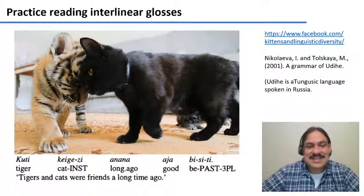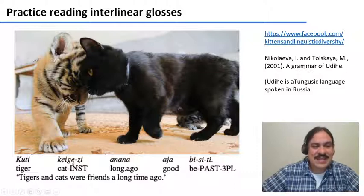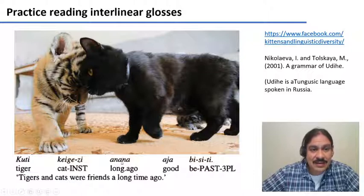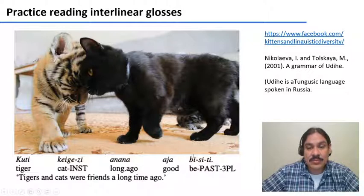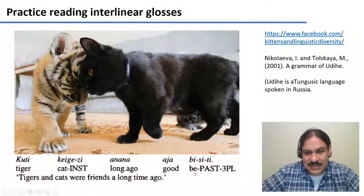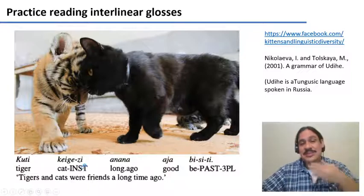Just one final example. This is a sentence from the language Udige, which is a Tungusic language spoken in Russia: 'Tigers and cats were friends a long time ago' — 'Kuti kei gezi, anana, aya, bisiti.' The word 'kuti' has just one morpheme — the root tiger. The word 'anana' has just one morpheme meaning long ago. Notice how we have a dot here, because this represents two units of translation meaning contained within a single morpheme of Udige. The word 'aya' means good. And the verb 'bisiti' has three morphemes: the root to be, the suffix for the past tense, and the suffix 'ti', which is the third person plural. This whole word means they were, and the sentence means: tigers, they were good long ago with cats. The instrumental means that you're doing something with somebody else.